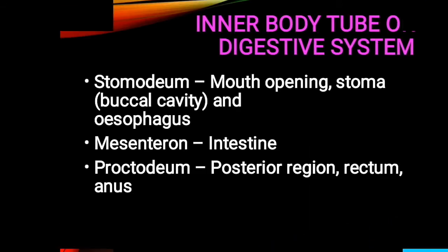Hi friends, I'm Priyanka from Entomology Coaching. Today's topic is the digestive system, otherwise known as the inner body tube or alimentary canal. It comprises three important parts: stomodium, mesenterone, and proctodium. The stomodium is the anterior region comprising a mouth opening, a buccal cavity called the stoma, and an esophagus. The mid part consists of the intestine.